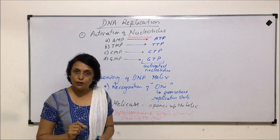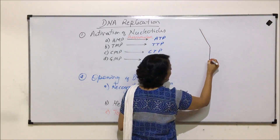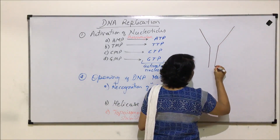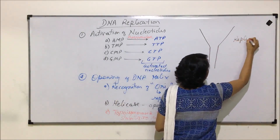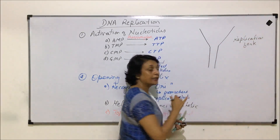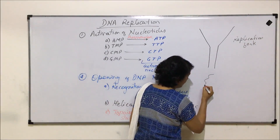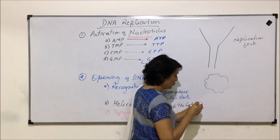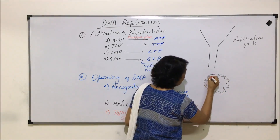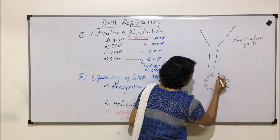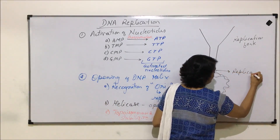If we are talking about a linear DNA molecule, it may open from the tip, and the opened-up part is known as a replication fork. But if the DNA is circular, the place where the two strands open up shows a wide separation between the two strands, and this separated part is known as a replication bubble.